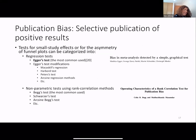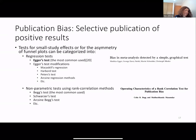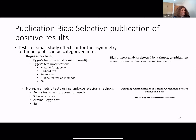The most popular tests for asymmetry of funnel plots are the Egger test and the Begg test. One is a regression test and the other is based on rank correlation. Given simulation studies, the Egger test is the most preferred, and we will talk a little bit about this test.